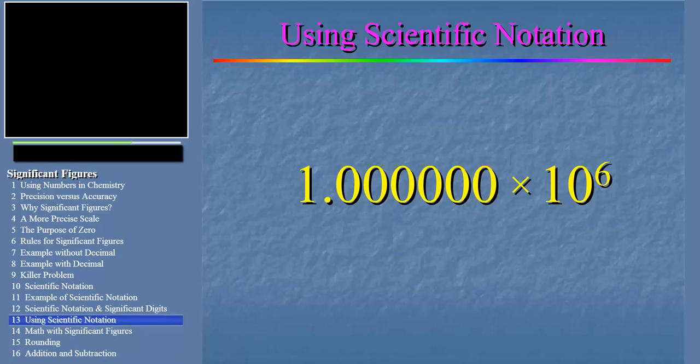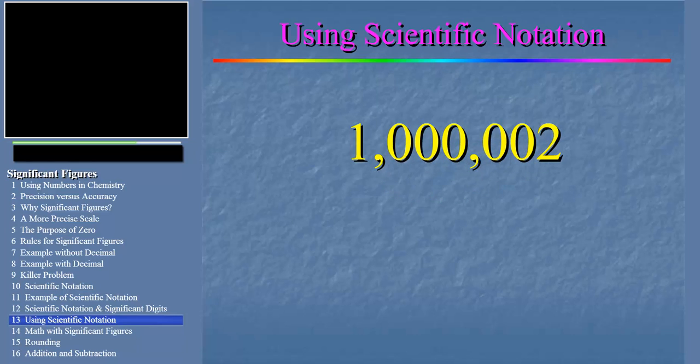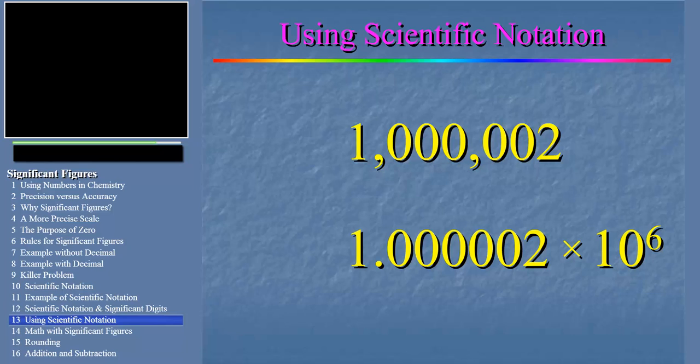But now let's try one million and two. Take a minute to convert this to scientific notation to show how many significant figures this number has. If we put this number in scientific notation we get 1.0000002 times ten to the sixth. In this form we can clearly count seven significant figures. Remember, we must count all digits to the last non-zero. Since two is the last non-zero digit, we count all the zeros in between.